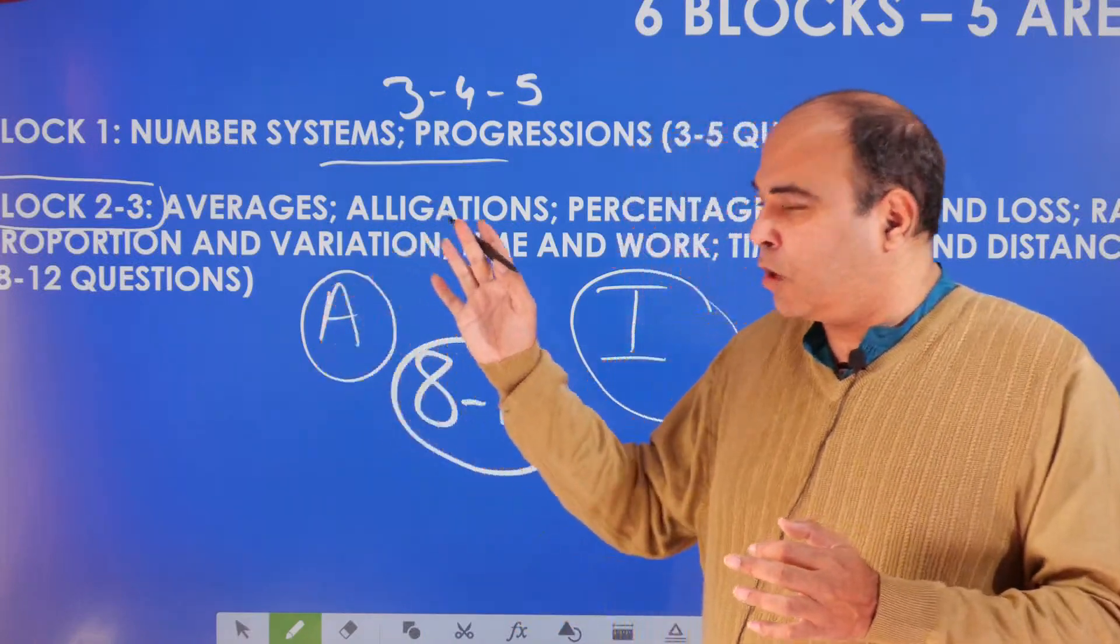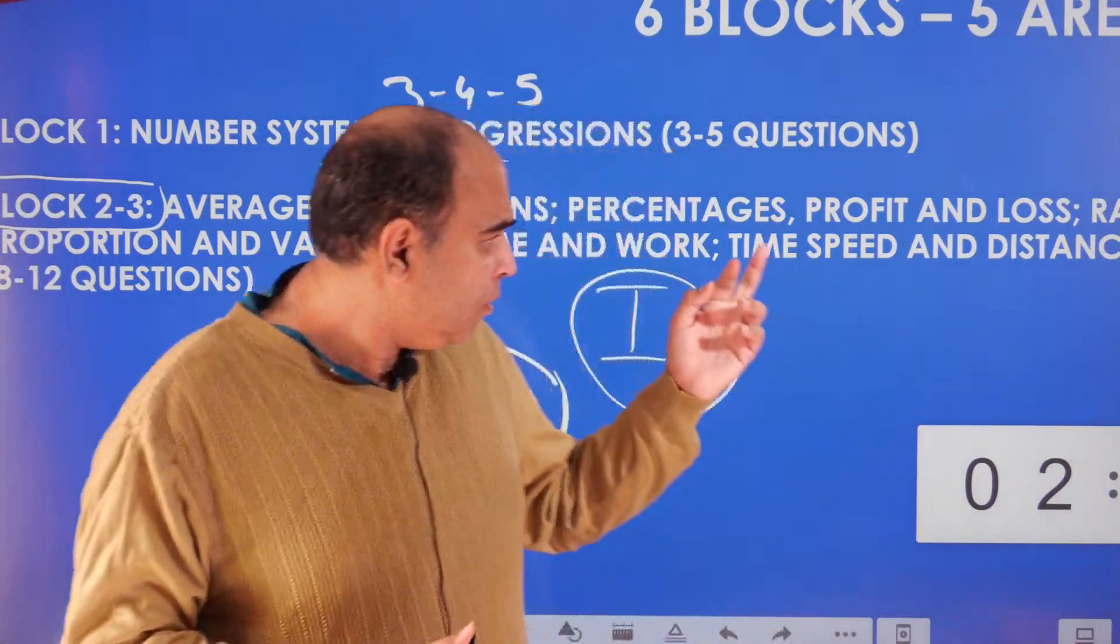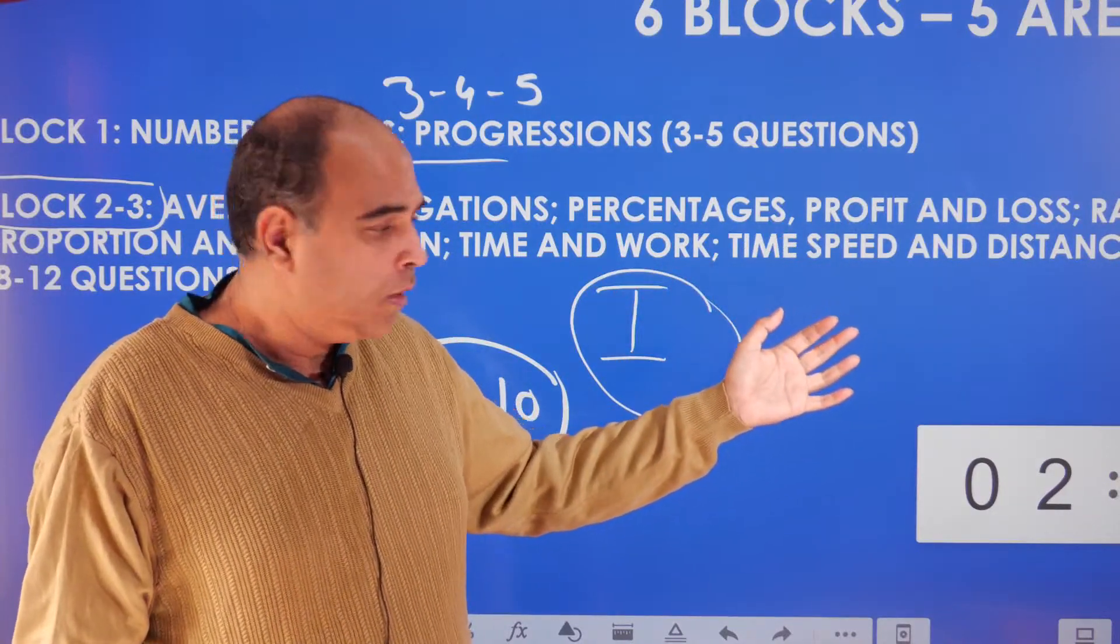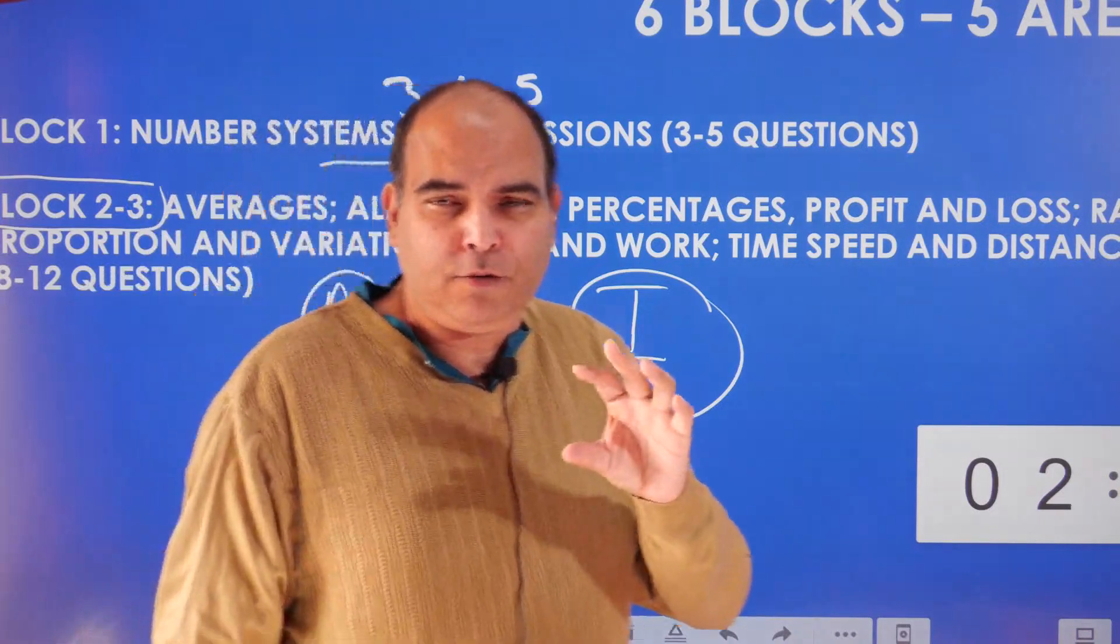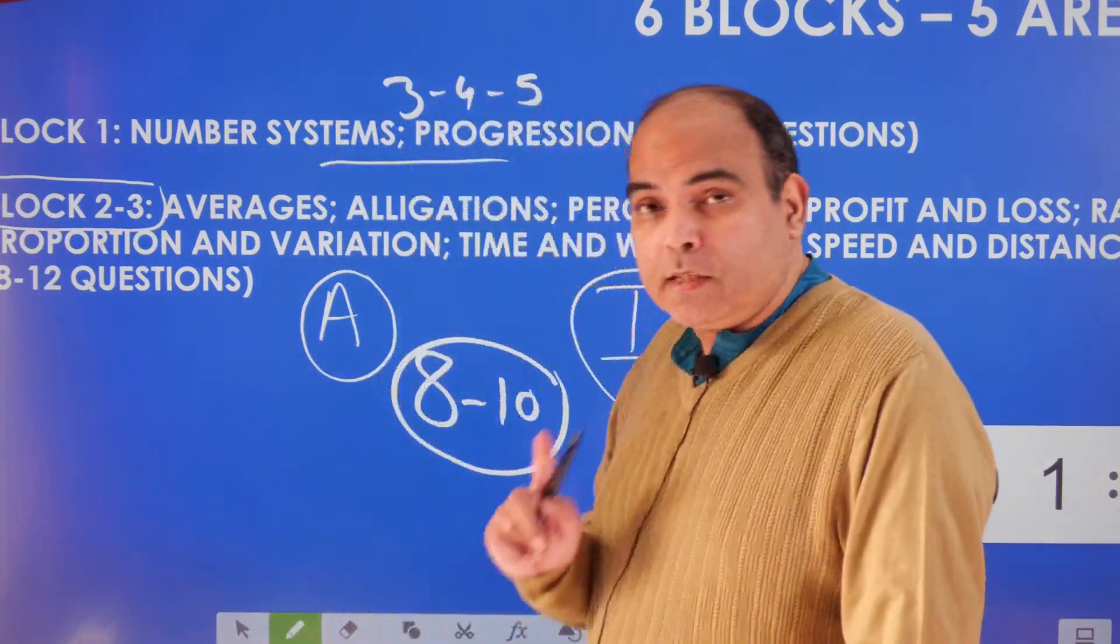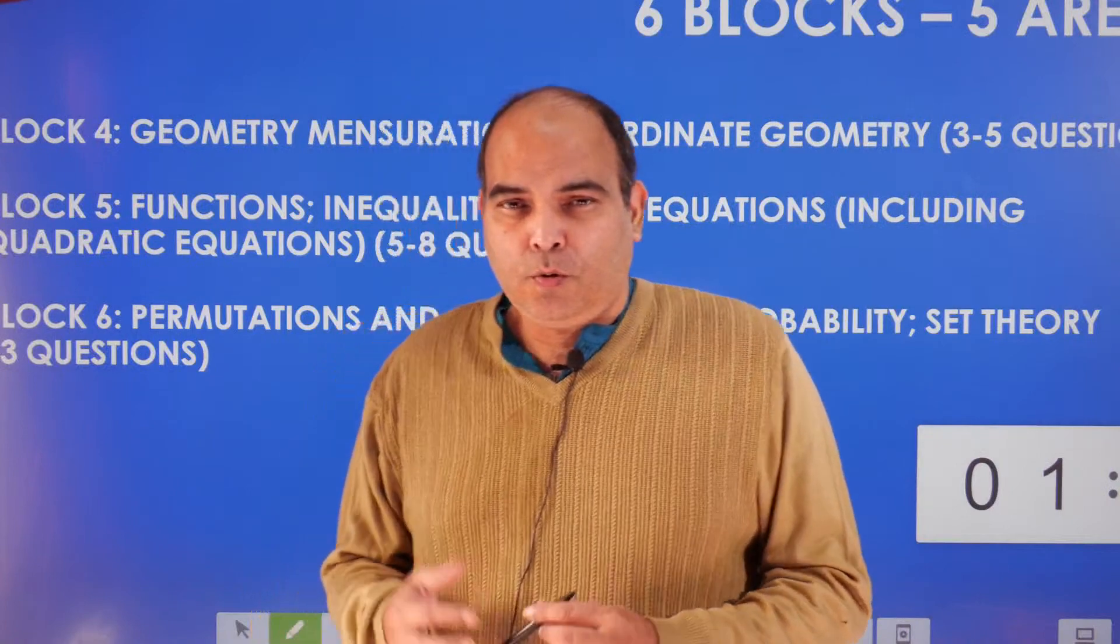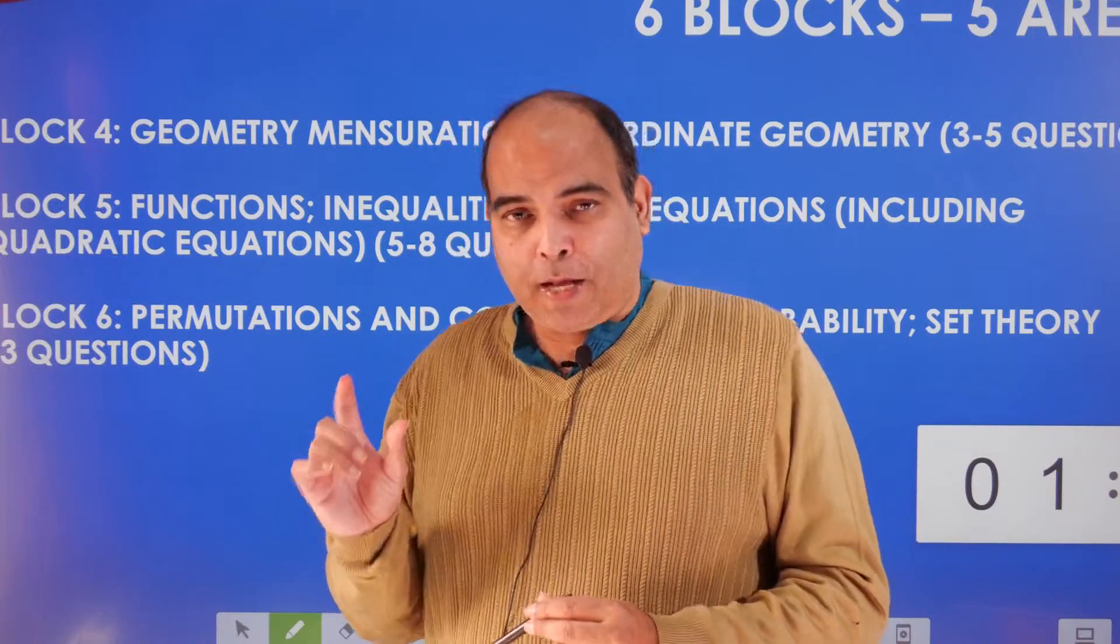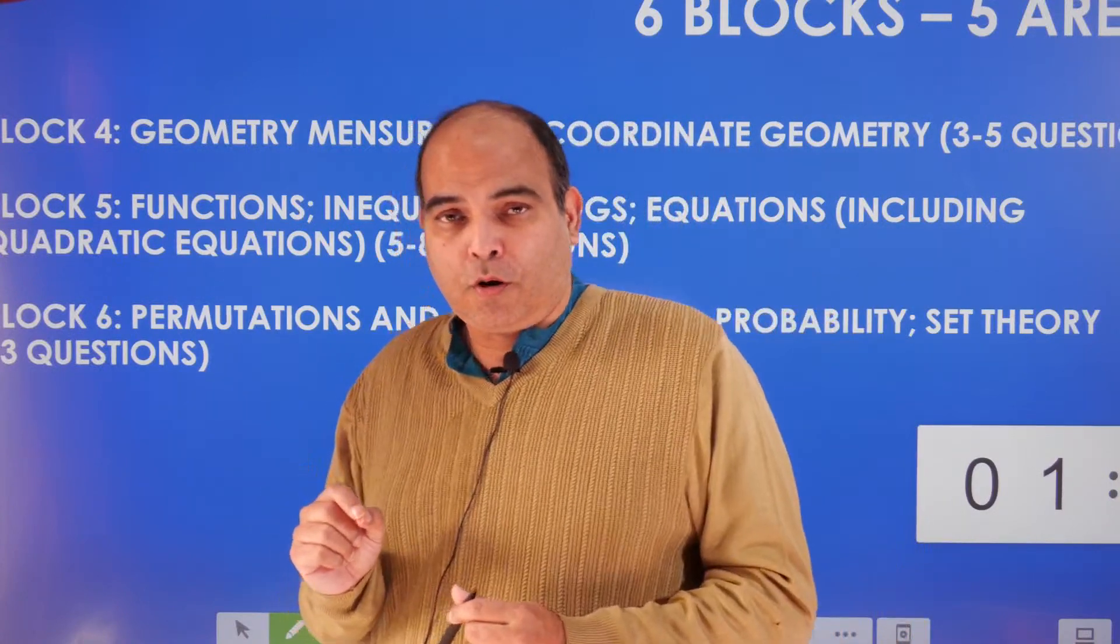Once you finish Block 1, this is kind of the halfway point, or maybe 55 percent point of your preparation—both from the number of question types angle and from the number of chapters angle. You would be through around 10 chapters. Even in terms of timelines, if you take eight to ten weeks here and three to five weeks there, somewhere between 11 to 15 weeks you should be finished with Block 2-3 and 1, at least the first round. You will have to do multiple rounds of each chapter before you are ready to crack the CAT.